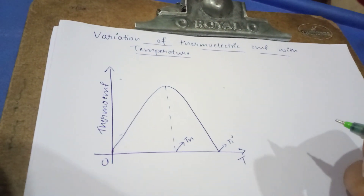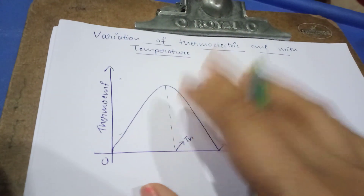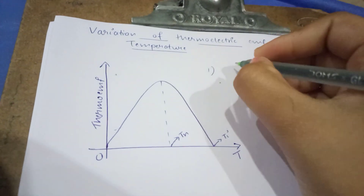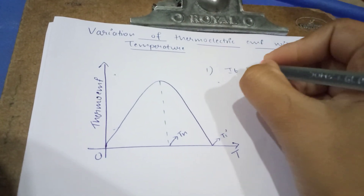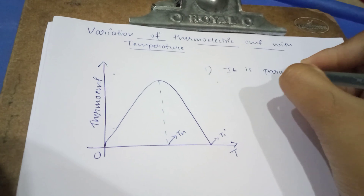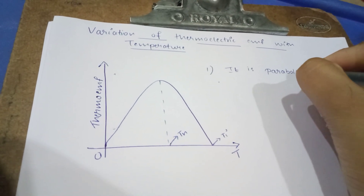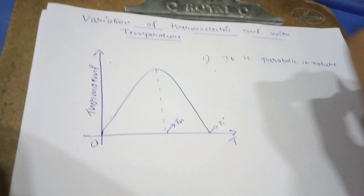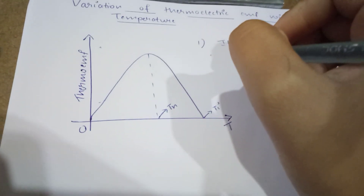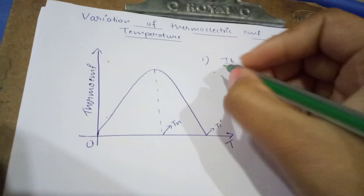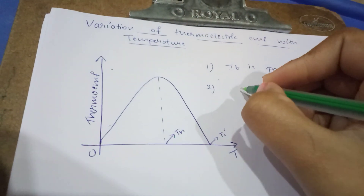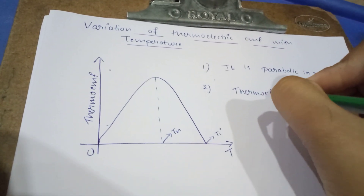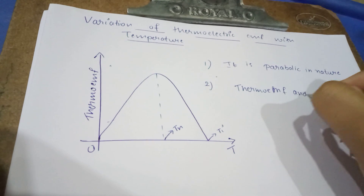The first thing you have to write in the explanation about this graph is that it is parabolic in nature. This graph shows the variation of the thermo EMF with temperature T.